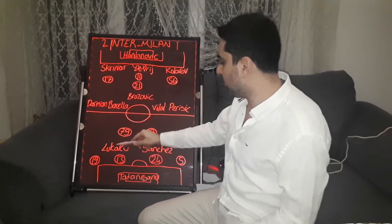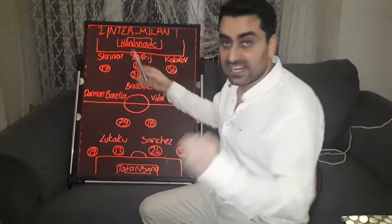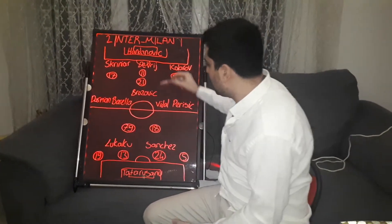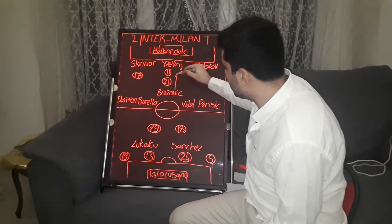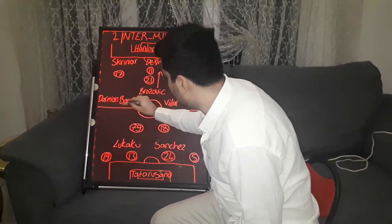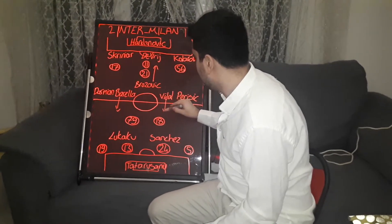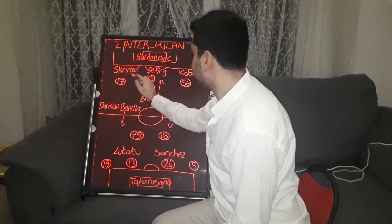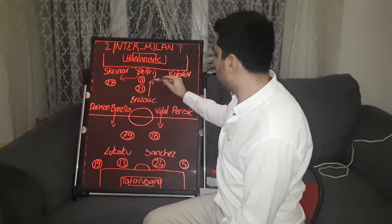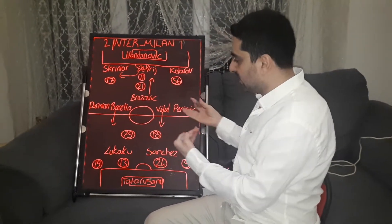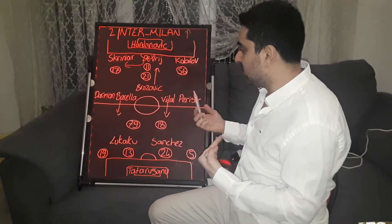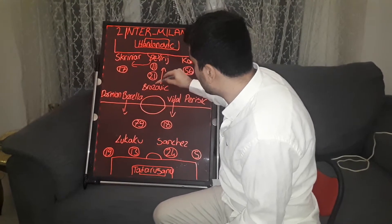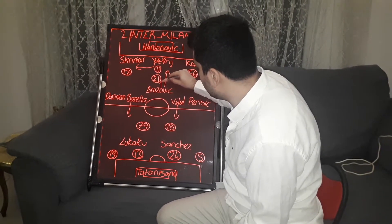Inter played in Antonio Conte's classic 3-5-2 formation. Brozovic played close to the defensive line, more defensively, while Barella and Arturo Vidal participated more in Inter's attacks. Sometimes de Vrij came close to the right, and Brozovic dropped back to the center of the defense to get the ball, start attacks, and deliver to teammates. Brozovic also played 1-v-1 against Brahim Diaz in midfield.